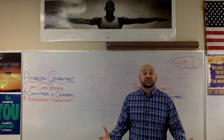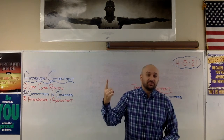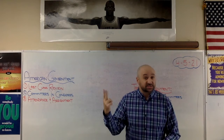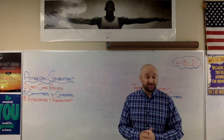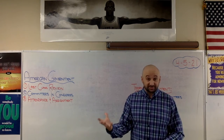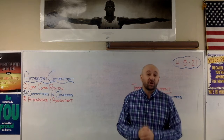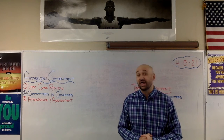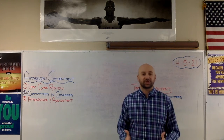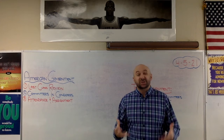First things first — last class review. We talked about the four different influences on congressional members: the people, the voters, the constituents — the people who they represent. We talked about political parties and what it means to be partisan or bipartisan, to vote along party lines or to work and reach across the aisle. We talked about the president and how the president can withhold or grant favors based on how people vote. And of course, interest groups, PACs, and lobbyists have a huge effect on congressional members.